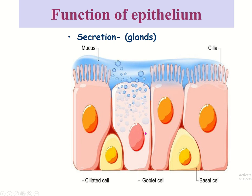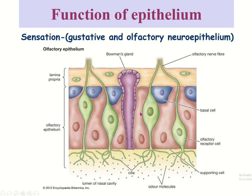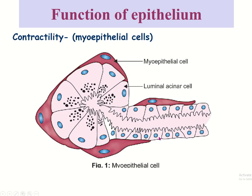Secretion is another function — some epithelial tissue is able to secrete. For example, the goblet cell secretes mucus. Sensation: some epithelial tissue receives sensory information. Contractility: the myoepithelial cell can contract and move secretion toward a particular pathway.